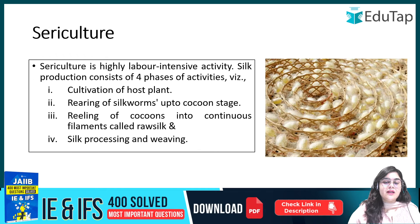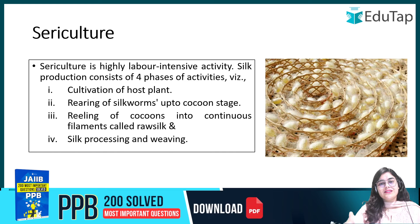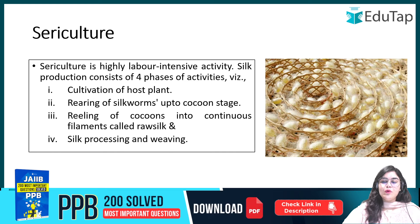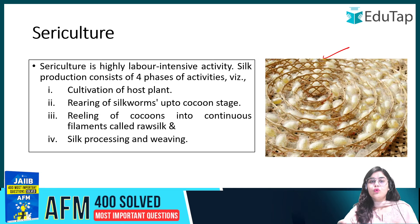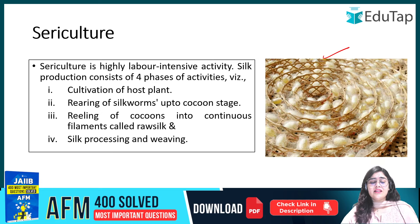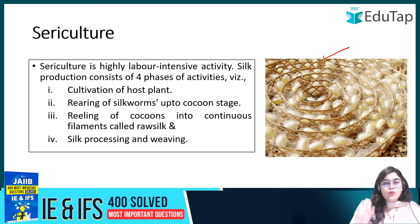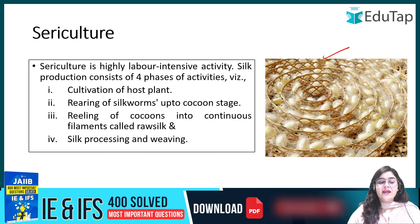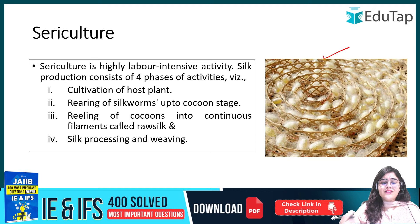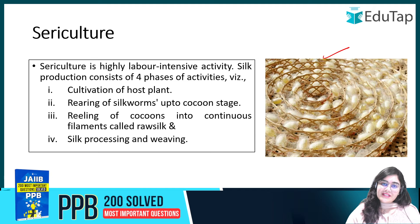Sericulture involves raising silk worms and extracting silk from them. It is a very labor-intensive activity. The process begins with host plant cultivation, then silk worms are grown to the cocoon stage. Raw silk is then extracted and processed. You can also get a loan for sericulture.